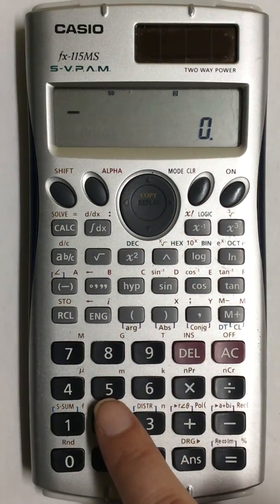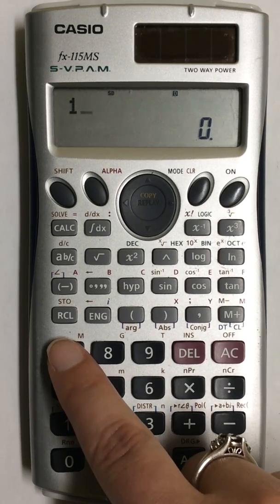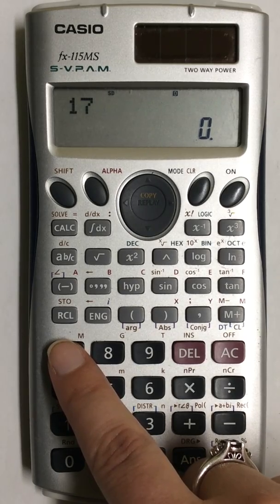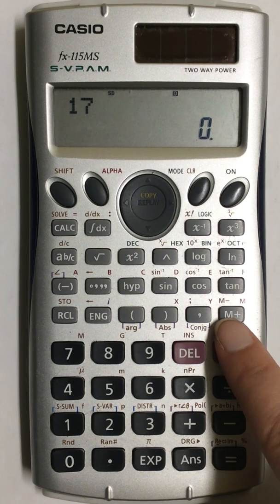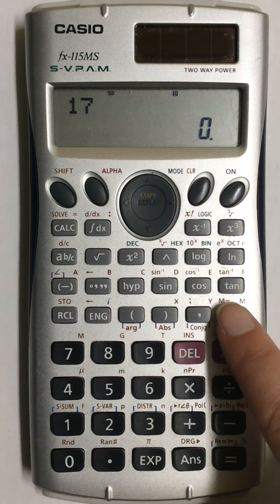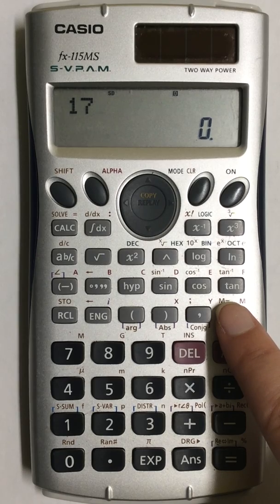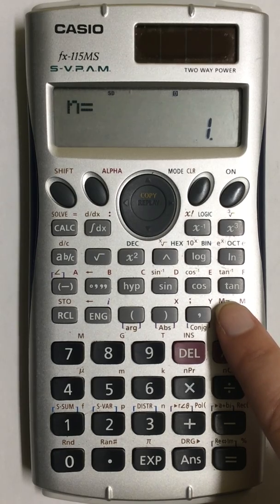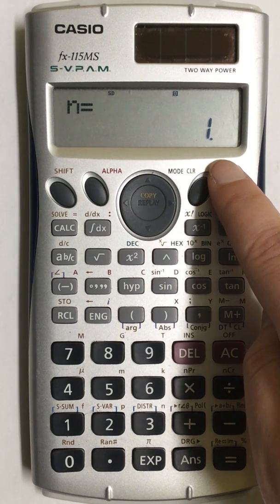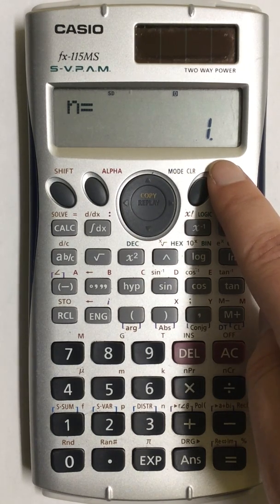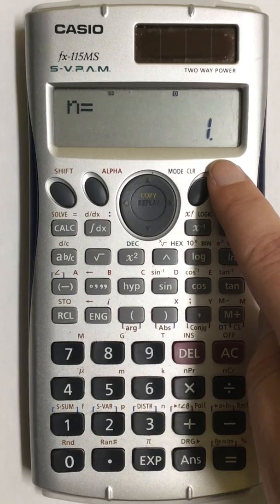So I'm going to begin putting in my numbers and then pressing M plus after every number. So I put in my first number and I press M plus. N equals 1 shows up on the screen that means I entered in one value. My first number.